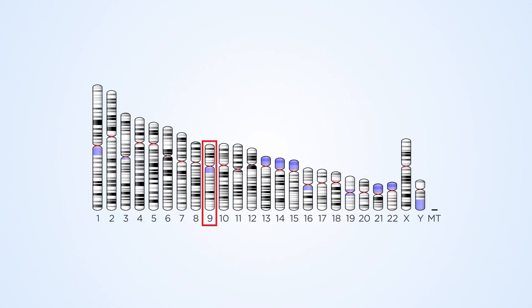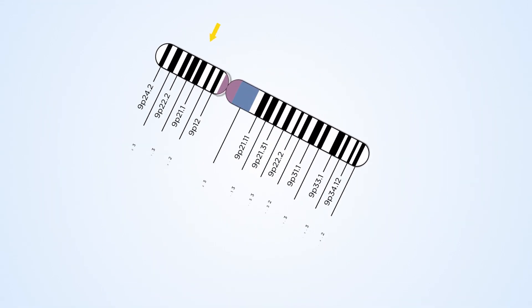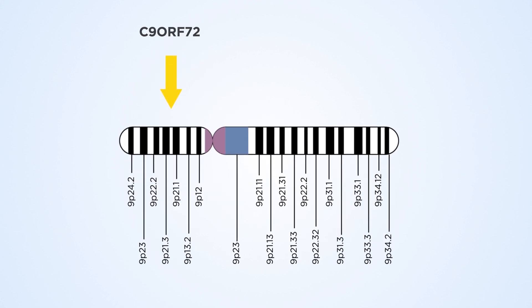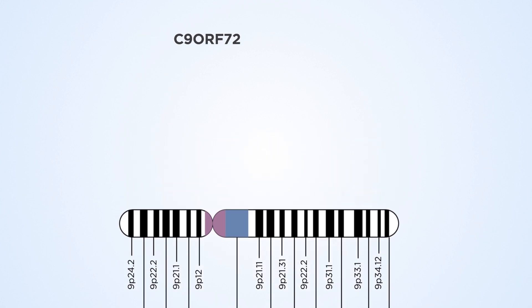An expansion in chromosome 9 open reading frame 72, C9ORF72, accounts for the majority of familial and a fraction of sporadic ALS.